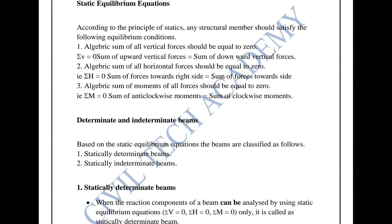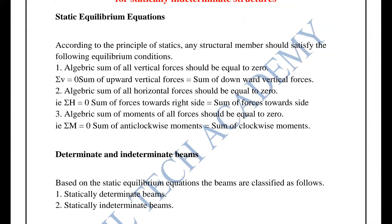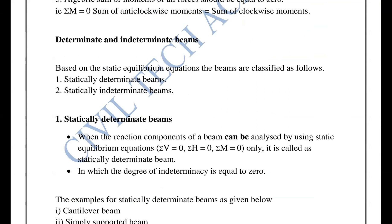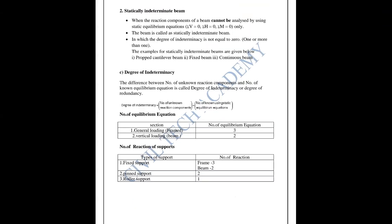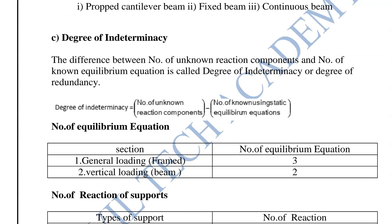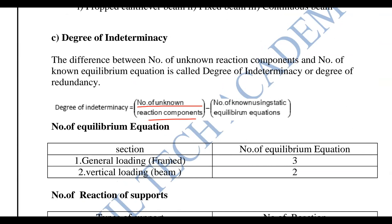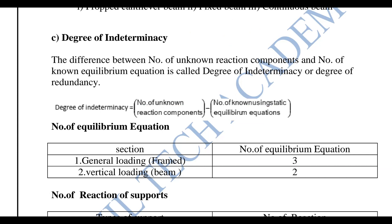First, the statically indeterminate structure — determinate or indeterminate, how do we find out? This is a formula. We will first find out the degree of indeterminacy. The degree of indeterminacy is the number of unknown reactions minus the number of equilibrium equations. We will find out the degree of indeterminacy. The value of Ds equal to 0 — this is the case of indeterminacy.